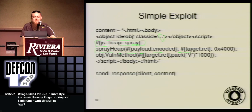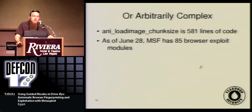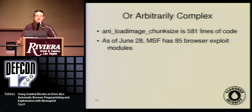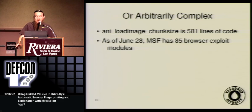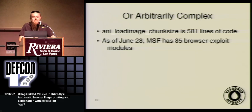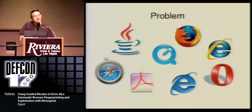We trigger whatever the heap corruption is, and it gives us a shell. Exploits can also be arbitrarily complex. For example, ANI load image chunk size is 581 lines of code — it's currently our biggest HTTP exploit. It's got to build up an image, throw the payload in there, and randomize some stuff. As of June 28th, Metasploit has 85 browser exploit modules. There's been a few zero-days in Internet Explorer and Firefox, and we have support for all of those — something like 87 or 88 now.